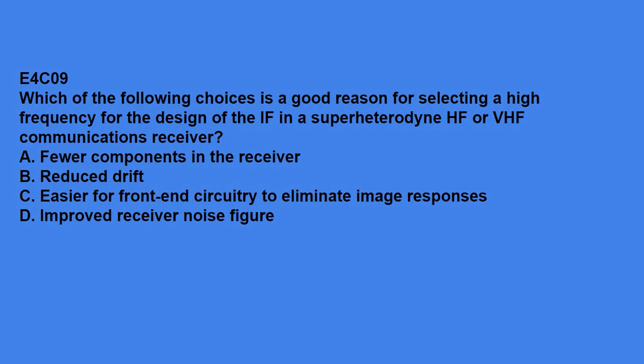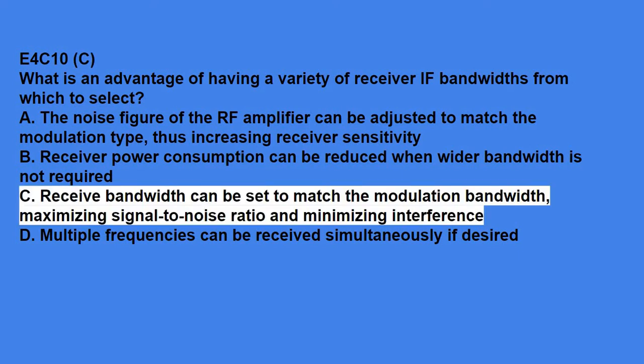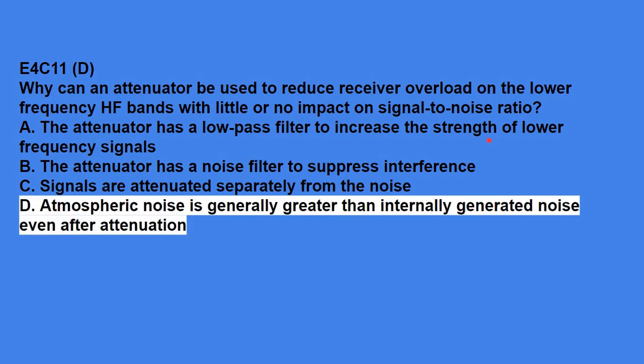E4C09, which of the following choices is a good reason for selecting a high frequency for the design of an IF in a super-heterodyne HF or VHF communications receiver? Answer is, easier for front-end circuitry to eliminate image responses. E4C10, what is the advantage of having a variety of receiver IF bandwidths from which to select? Answer is, received bandwidth can be set to match the modulation bandwidth, maximizing signal-to-noise ratio and minimizing interference. E4C11, why can an attenuator be used to reduce receiver overload on the lower-frequency HF bands with little or no impact on signal-to-noise ratio? Answer is, atmospheric noise is generally greater than internally generated noise, even after attenuation.